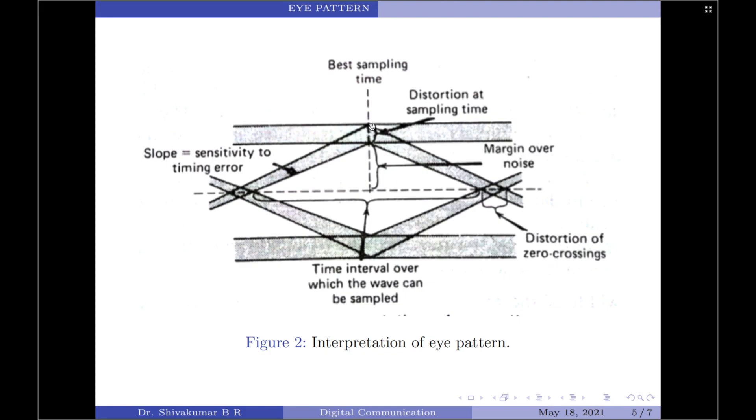Further, the width of either the upper or the lower trace will provide information about distortion that can be produced at the sampling time, and the width of the eye trace where the eye traces from the upper and lower portions overlap, they provide information on distortions of zero crossings.